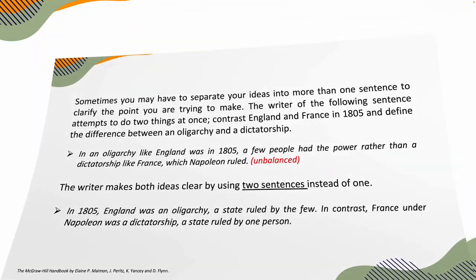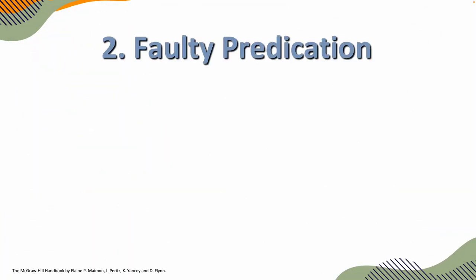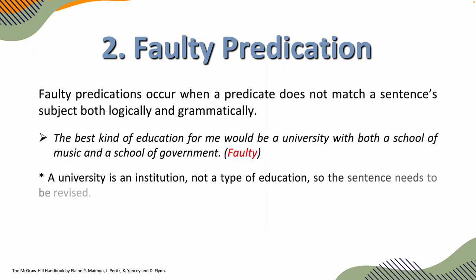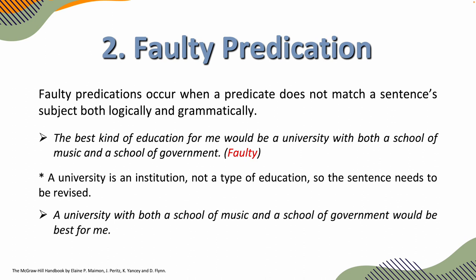So let's take a look at faulty predication. Faulty predications occur when a predicate does not match a sentence's subject, both logically and grammatically. 'The best kind of education for me would be a university with both a school of music and a school of government.' This is faulty. A university is an institution, not a type of education. So the sentence needs to be revised: 'A university with both a school of music and a school of government would be best for me.'